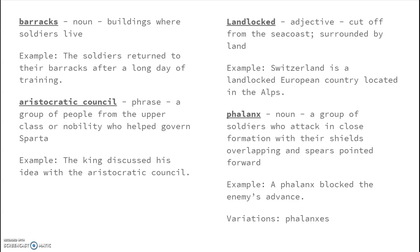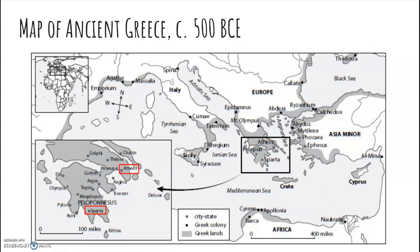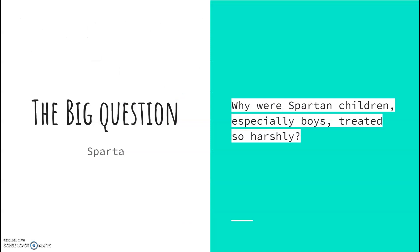So where are we today? We're in the Mediterranean region. That red circle identifies where Sparta is — that's what we're learning about today. Let's look at how Sparta in the red box and Athens up here in the other red box were located. These are the two Greek civilizations we know the most about, and we know the most about Sparta because of Athens. They're about 100 miles apart using our scale. Why were Spartan children, especially boys, treated harshly? That's what this is all going to lead to.